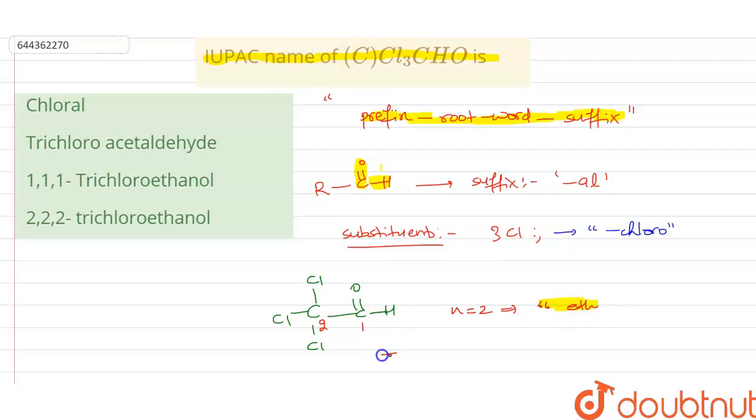And so if we follow the rule, then the compound's name as per the IUPAC will be 2,2,2-trichloroethanal. But this IUPAC naming is not given in this option.